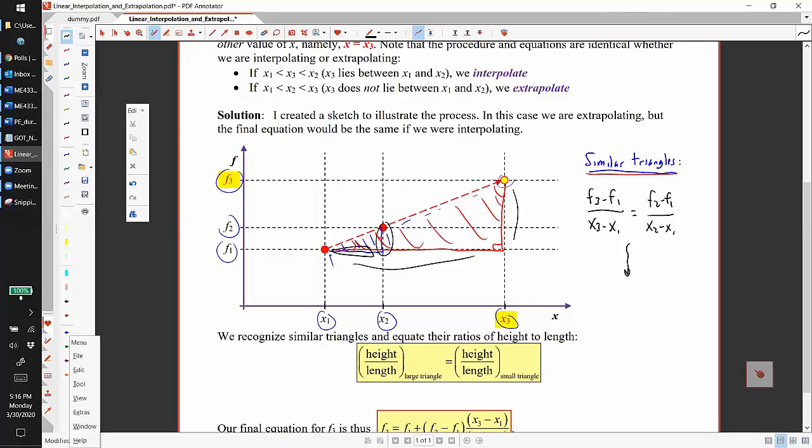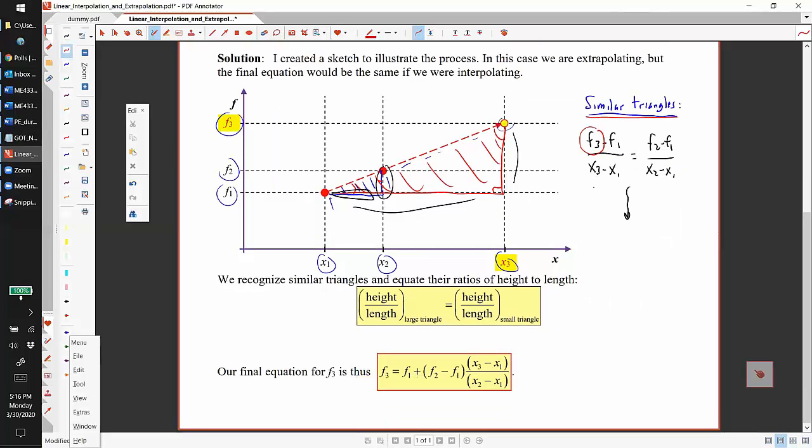So you solve this equation for f3 and you get this equation, which is our final equation for interpolating—in this case extrapolating. If x3 happened to lie between the two points in the beginning, the same equation would still work. So it works for whether you interpolate or extrapolate.